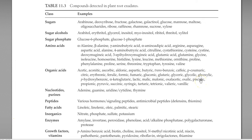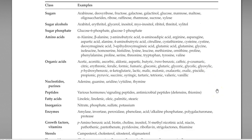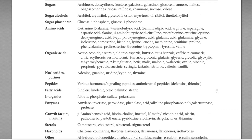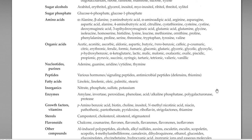The various carbon compounds originating from plant roots include a list of organic compounds detected in plant root exudates. They include sugars, sugar alcohols, sugar phosphates, amino acids, and different kinds of organic acids. Also present are nucleotides, purines, peptides, fatty acids, and inorganics such as nitrate, phosphate, and sulfate.